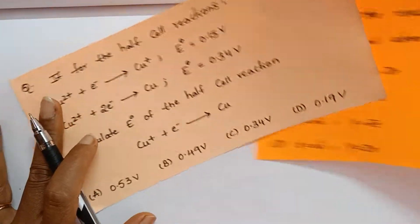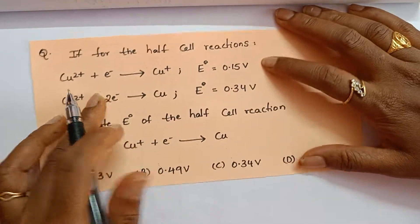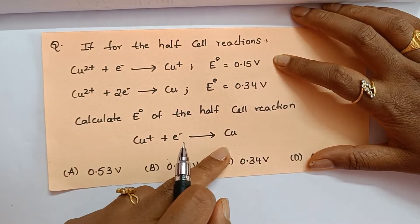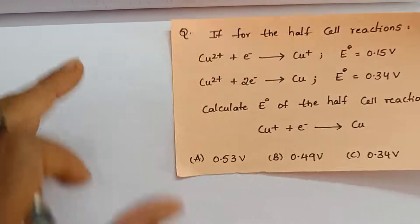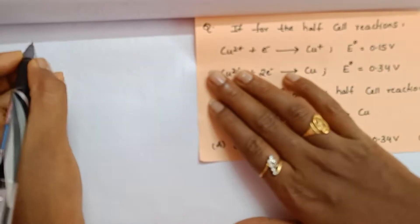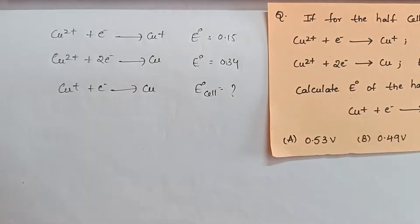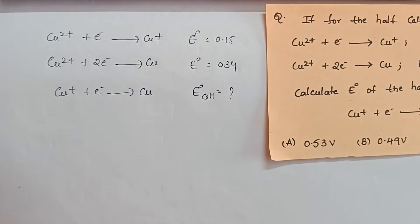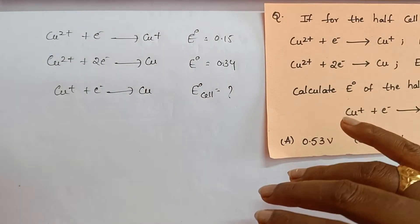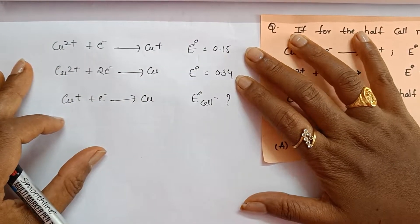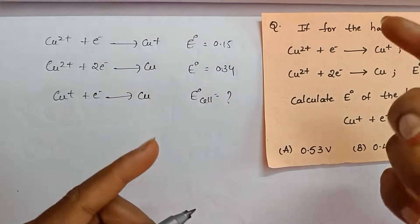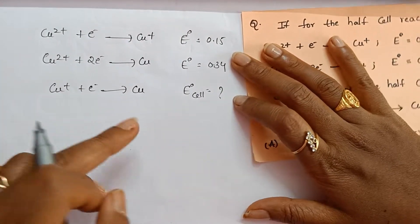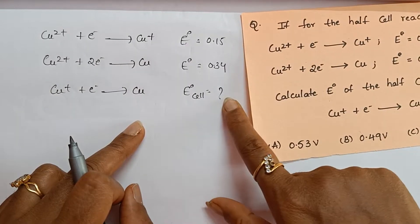See this question - very important model. If for the half cell reactions, they are given two half cells and asking for this, to save time I am writing here now. This is a question. Whenever you see this question and the solution in the textbook, it will be little lengthy. Now I am not going to discuss the normal procedure. I am going to tell you the short technique how to solve this question.